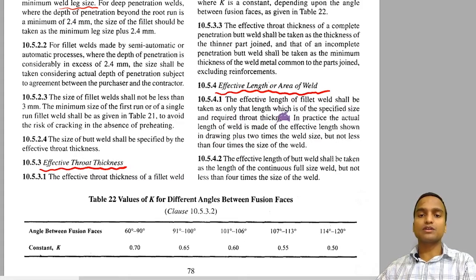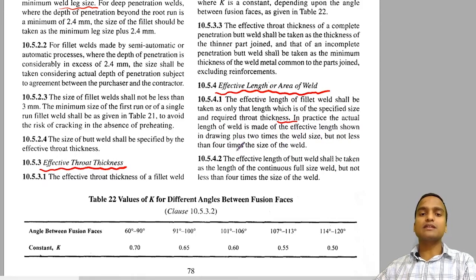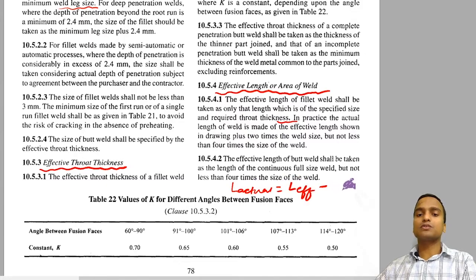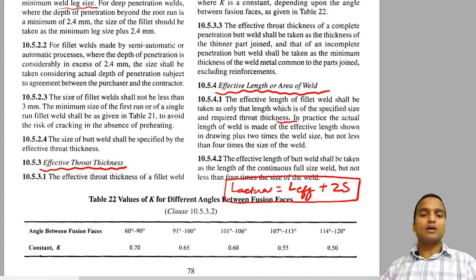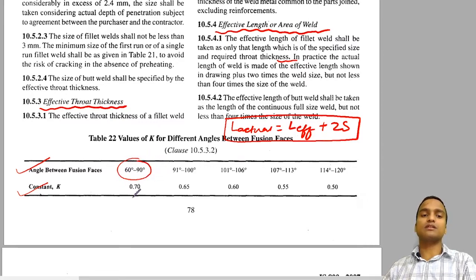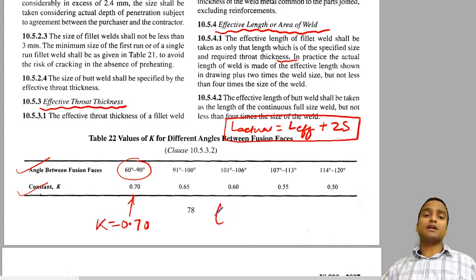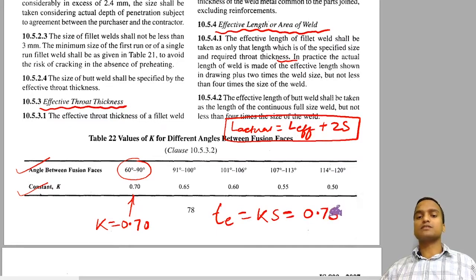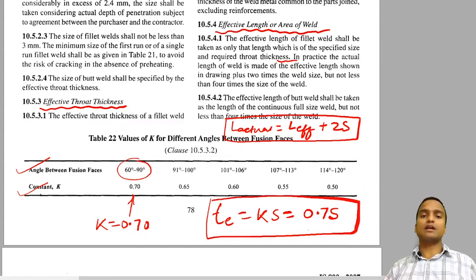The effective length of a fillet weld is taken as only the length of specified size and required throat thickness. In practice, the actual length of weld is the effective length shown in drawings plus 2 times the size of weld, but not less than 4 times the size of weld. So L_actual = effective length + 2s, as per the code. The k values for different angles between fusion faces are given in the code: for 60° to 90°, k = 0.70, giving effective throat thickness = 0.7 × size of weld.